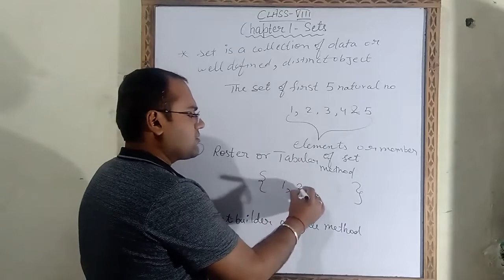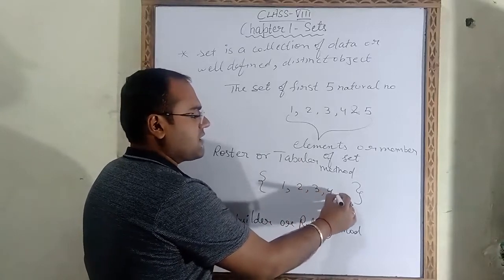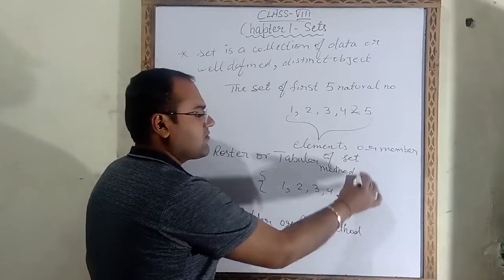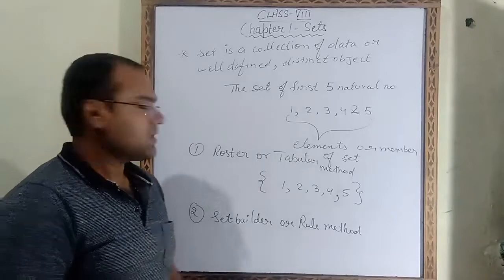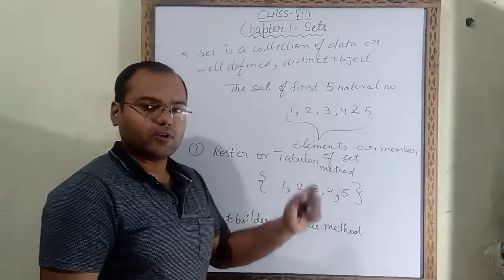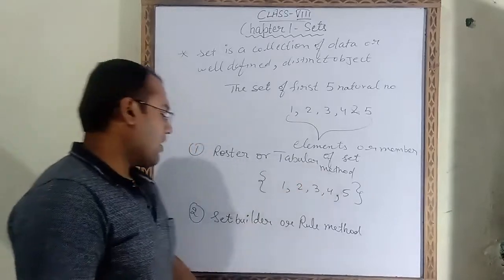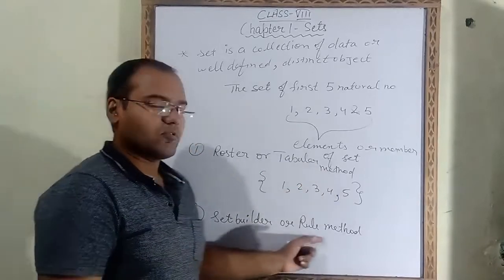So in roster method we write: 1, 2, 3, 4, and 5. Such a method is called the roster or tabular method. Now the second method is the set builder and rule method.